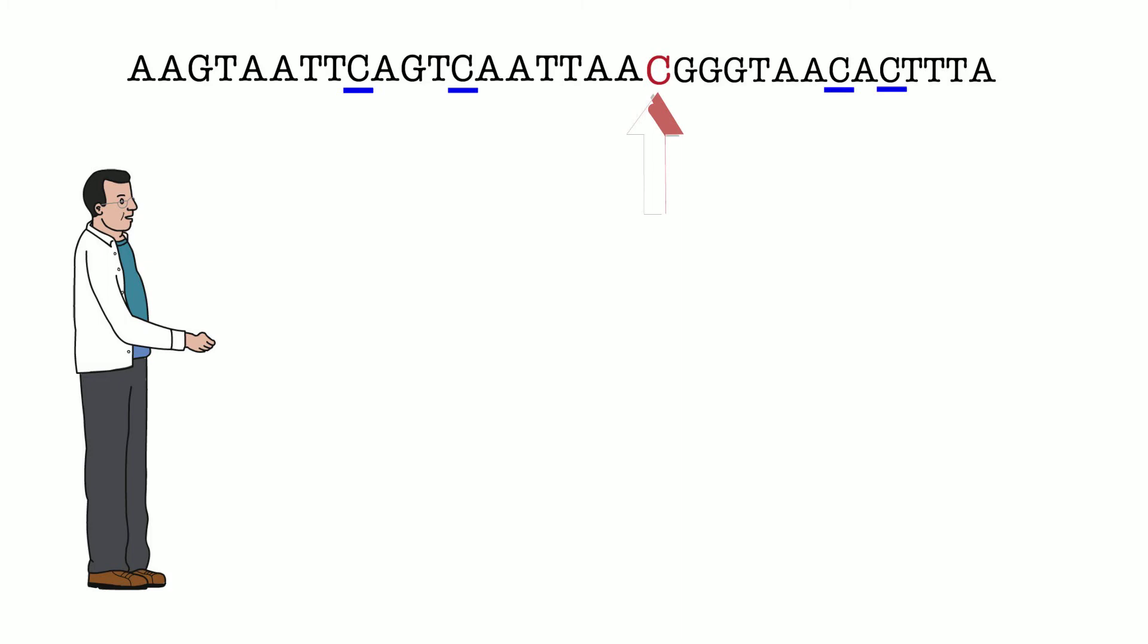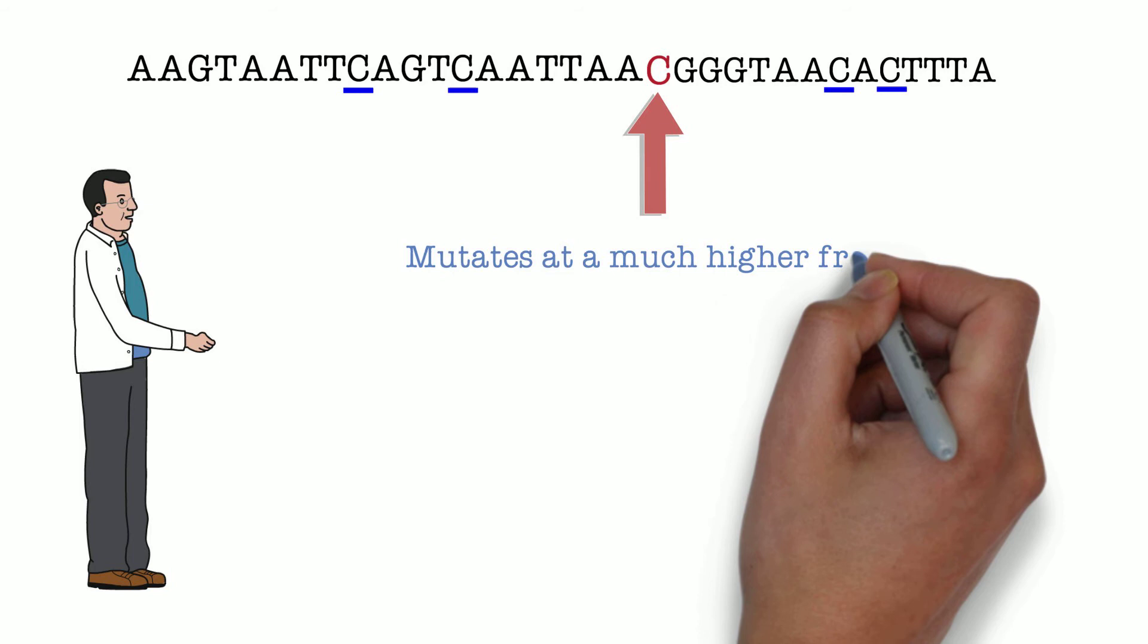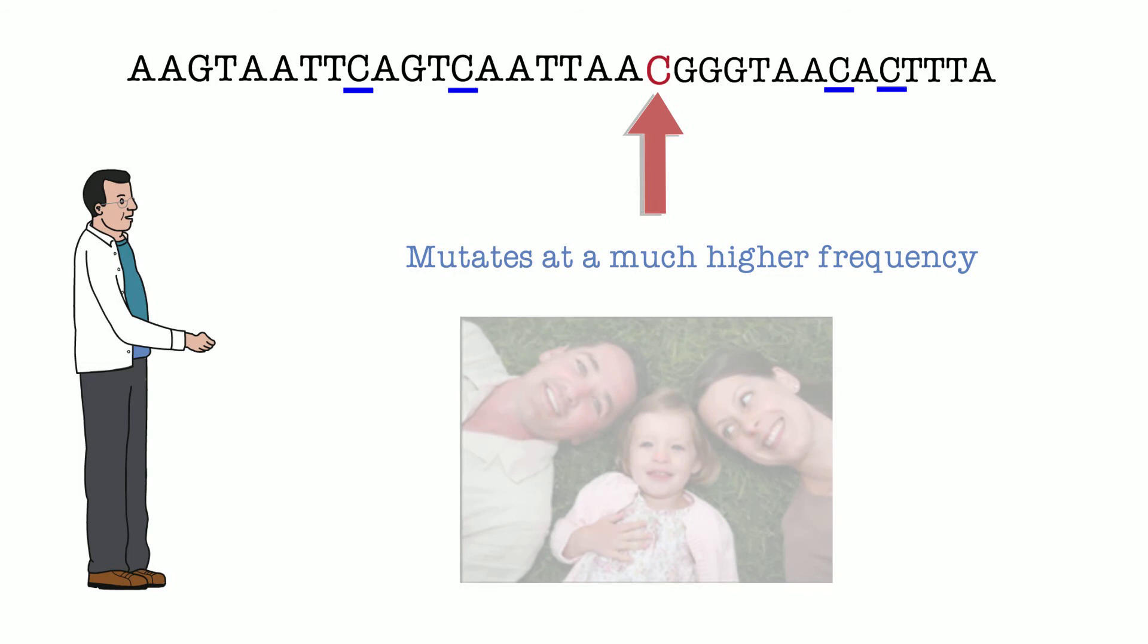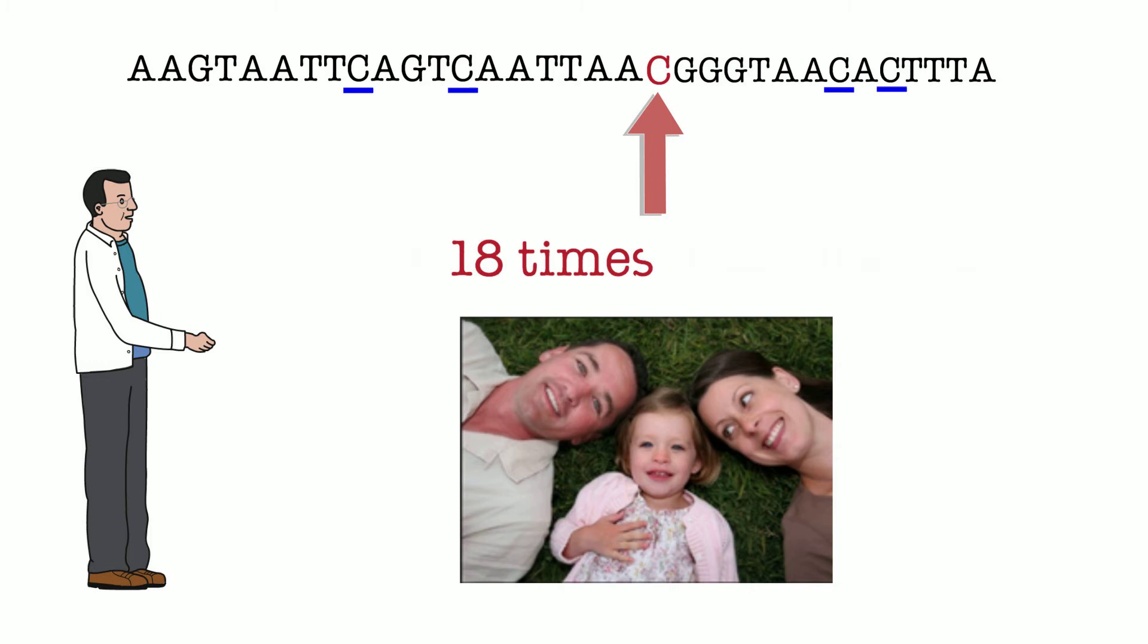When a C is to the immediate left of a G, it changes, or mutates, at a much higher frequency. Indeed, by analyzing the DNA coding sequence of a child relative to her parents, such Cs mutate at a frequency that is 18 times higher than the other Cs.